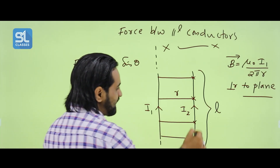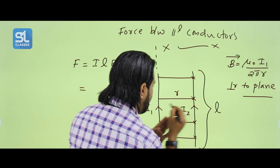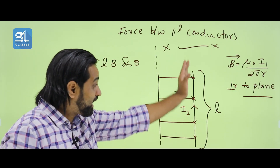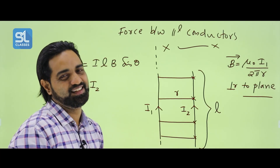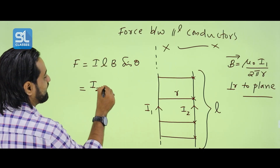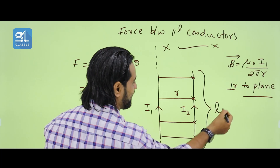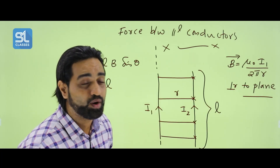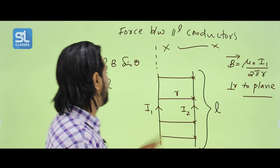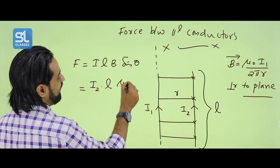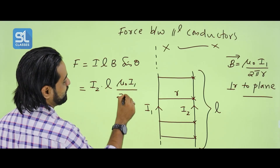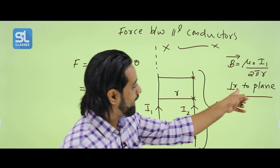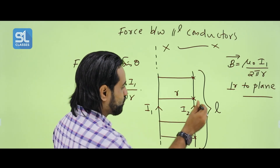The current in the second conductor is I2. Length is L. The magnetic field B is from the first conductor, which is μ₀I₁ by 2πR. Since the magnetic field is perpendicular to the plane and the conductor lies in the plane, sinθ = sin90°.